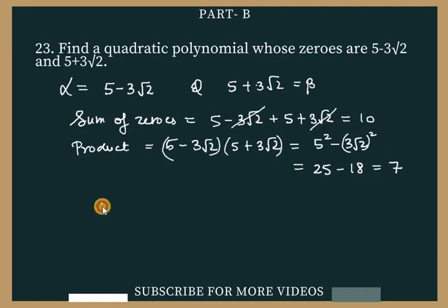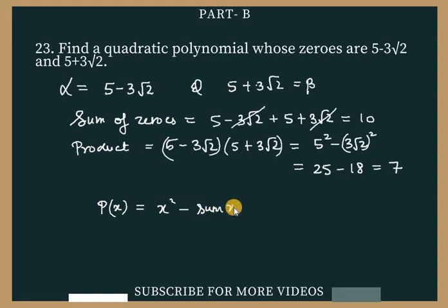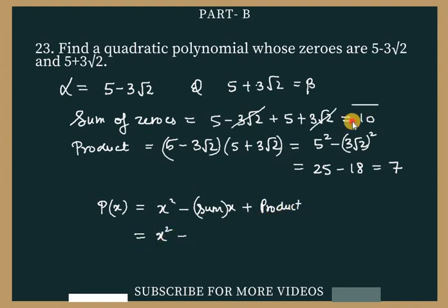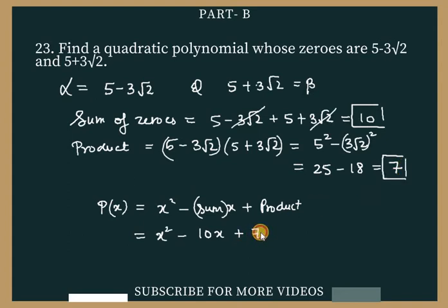Now we form the polynomial. The formula is: p(x) = x² - (sum of zeros)x + (product of zeros). Sum is 10 and product is 7, so the quadratic polynomial is x² - 10x + 7.